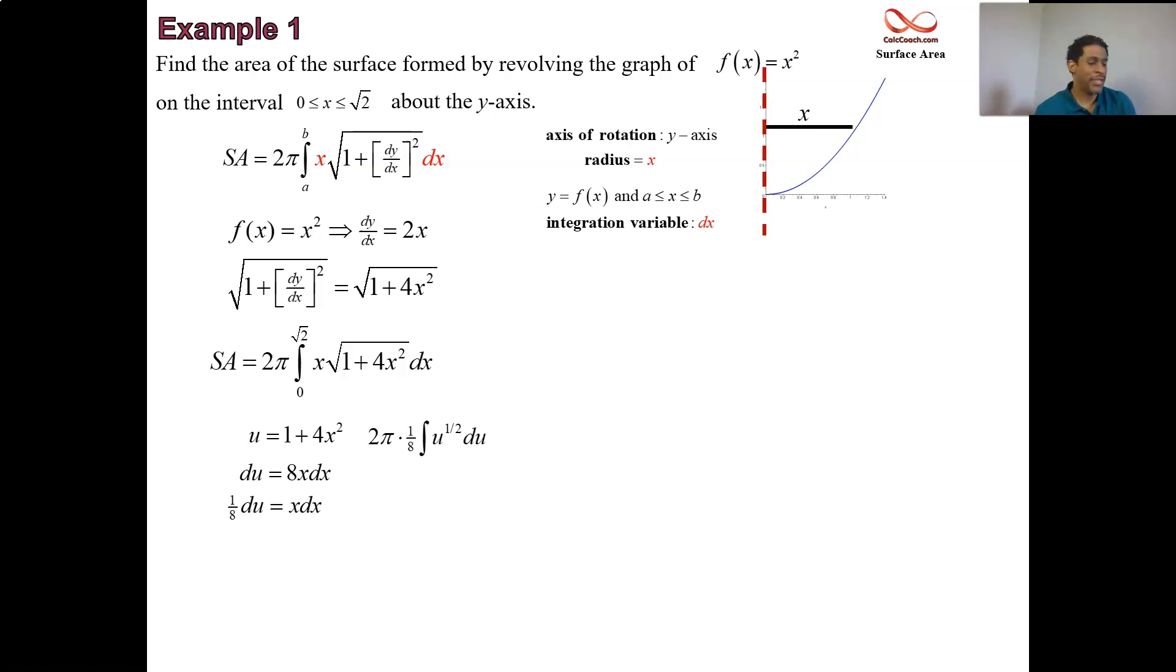Integrating u to the half, you get u to the 3 halves times 2 thirds, a bunch of constants here. And so we cancel the 4 that's in the numerator with the 8 that's in the denominator. We end up with pi over 6. u to the 3 halves, but u is 1 plus 4x squared. This is all some side work to help us figure out that the antiderivative of our function, who's in our integral, is exactly pi over 6 times that 1 plus 4x squared raised to the 3 halves.